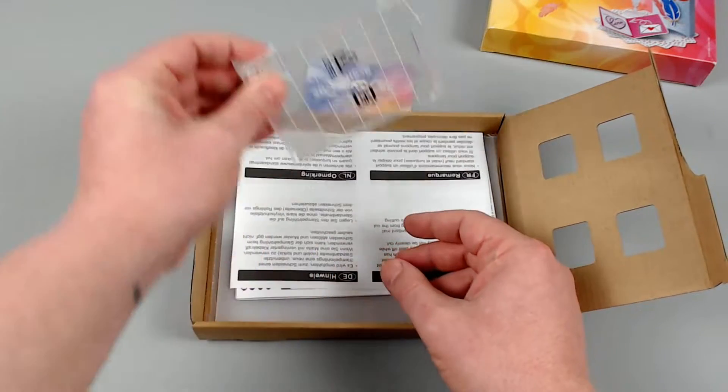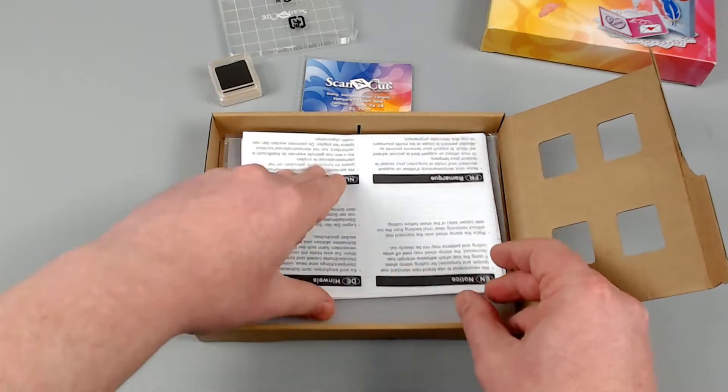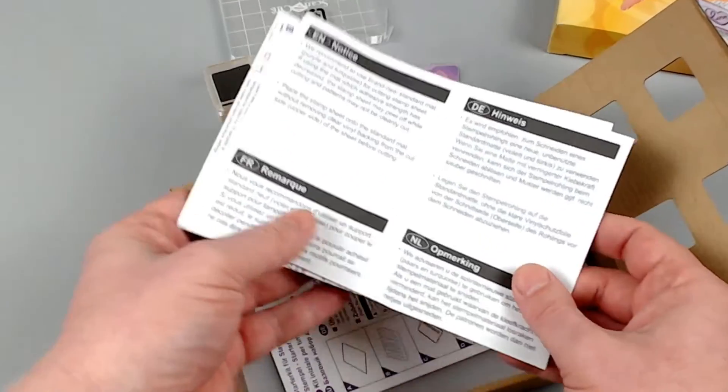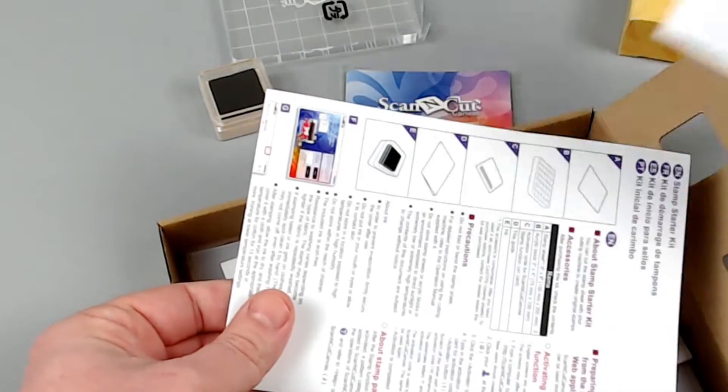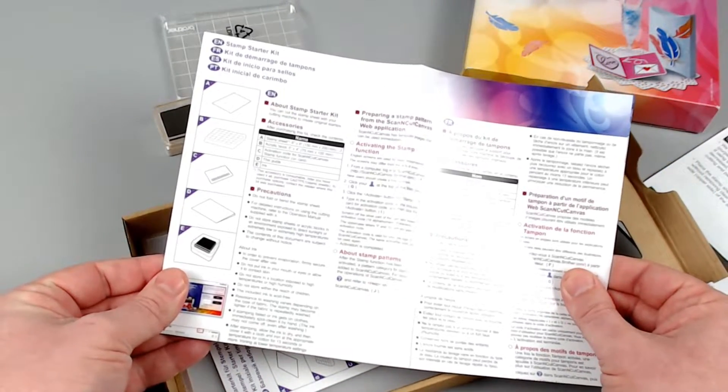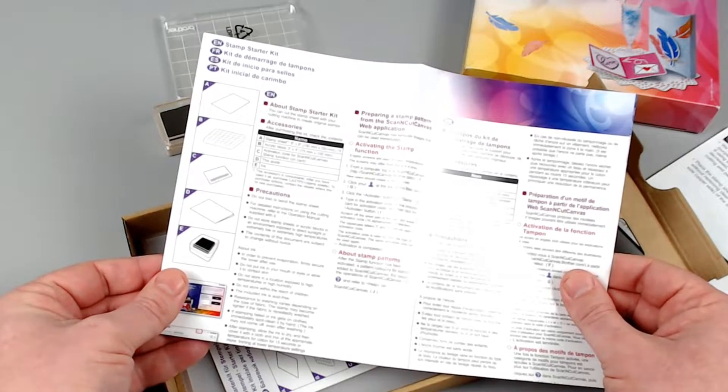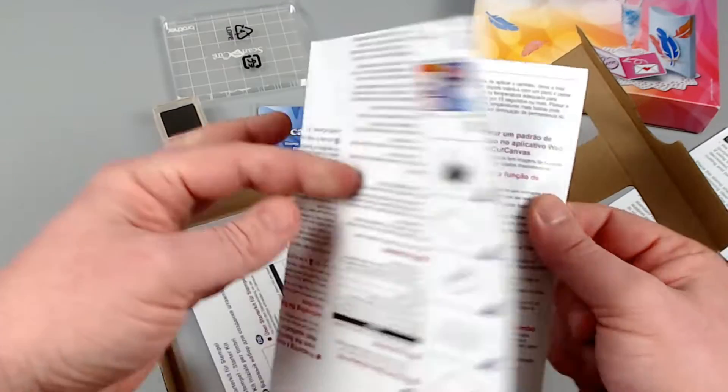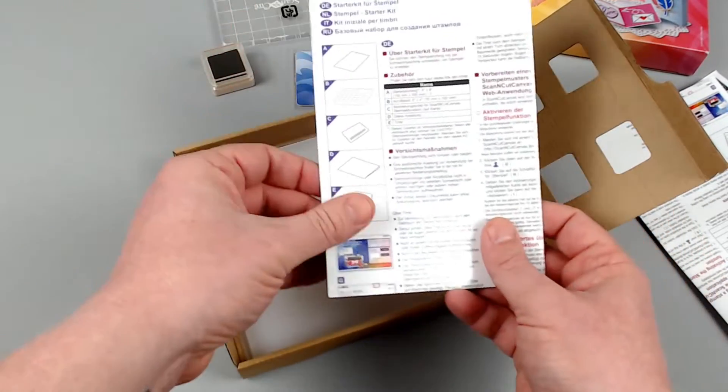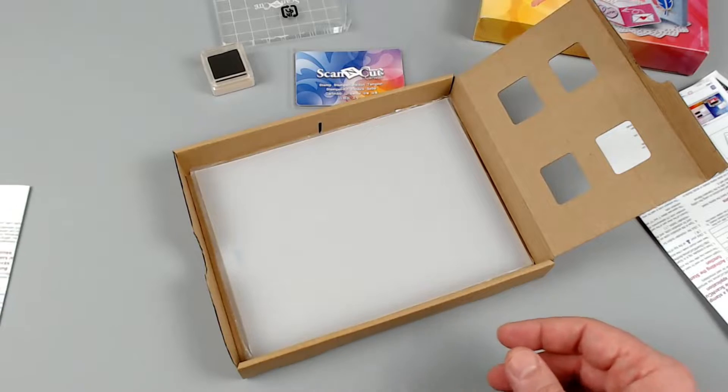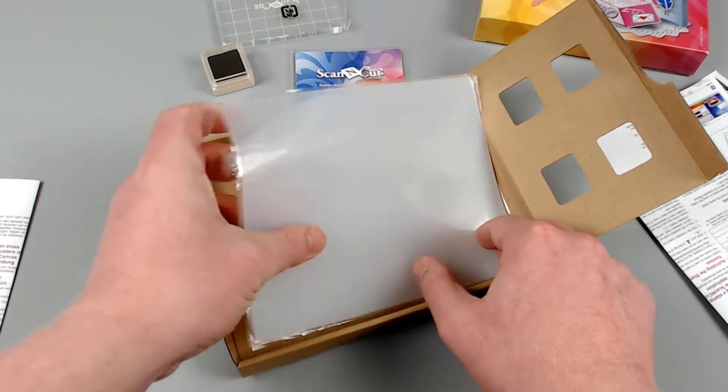Then you will see an acrylic block. This is what we mount the rubber stamp onto to make an impression. And then we have various bits of documentation. There are some notices from Brother there and also the full instructions taking you right from identifying the different elements through to a full step by step of how to perform the cutting operation with this kit. It comes in various languages so you can discard any that you don't need.